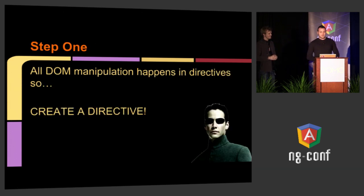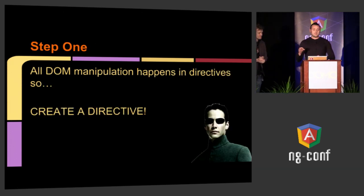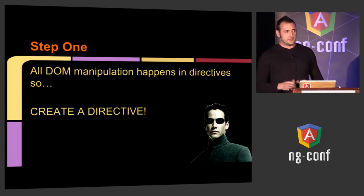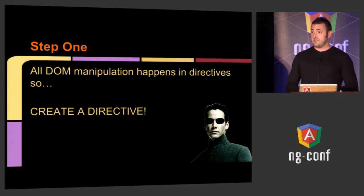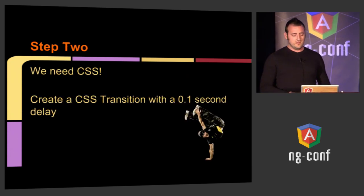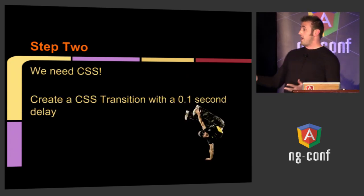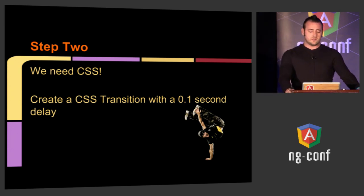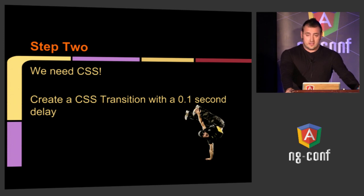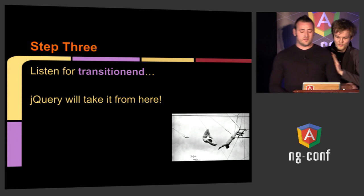The first thing we need to do is — what do we know about AngularJS? All DOM manipulation happens in directives. So the first thing we need to do is create a directive. The second thing we need to do is move things around. We are going to create a CSS transition with a tenth of a second delay, and from there we are going to listen for transitioning.